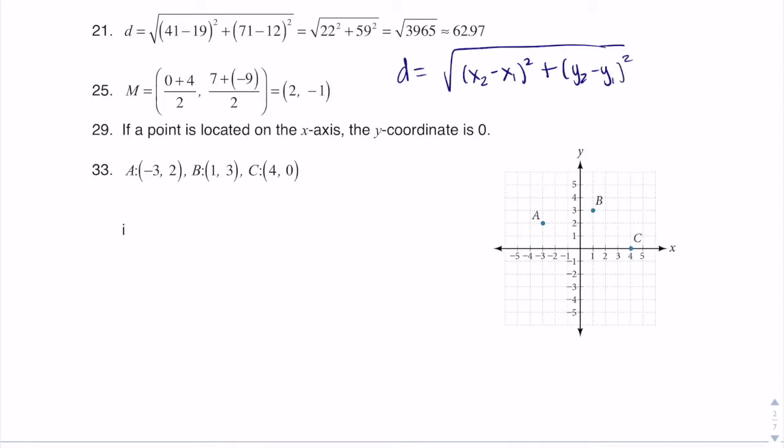And it doesn't matter which ordered pair you call x1, y1, or x2, y2. And ultimately, for our problem, we have the two ordered pairs, (19, 12) and (41, 71).